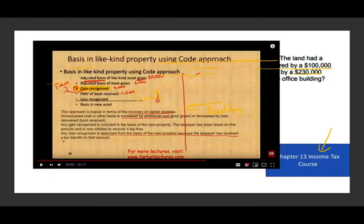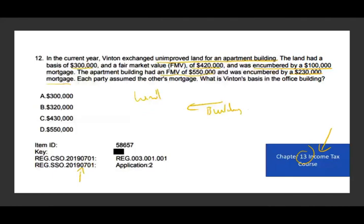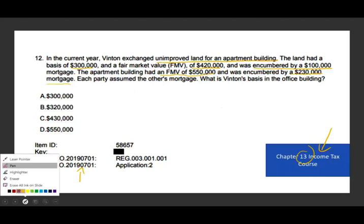This is called a like-kind property exchange — a non-taxable transaction. It's extremely important on the exam and is covered in Chapter 13 with over 50 minutes of lecture. There are two formulas you can use to solve this: one I call the fair value formula, and the other is the code or cost basis formula. I'll show you both. We're solving for the adjusted basis of the new property received in a like-kind exchange.